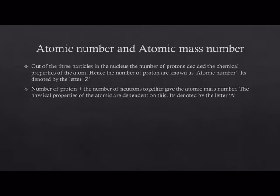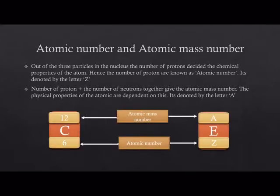On the other hand, number of protons plus the number of neutrons together give you the atomic mass number. The physical properties of the atom are dependent on atomic mass number. It is denoted by the letter A. While writing, atomic mass number is written on the top of the element while atomic number is written at the bottom of the element.